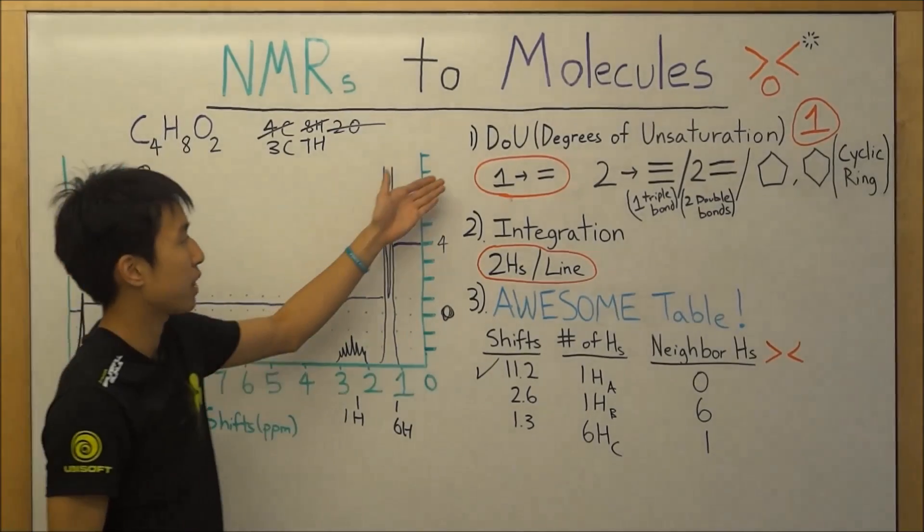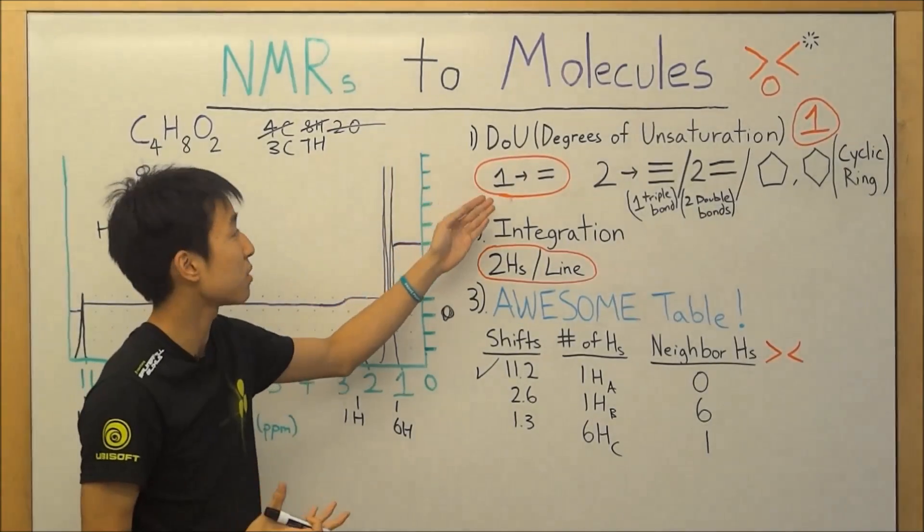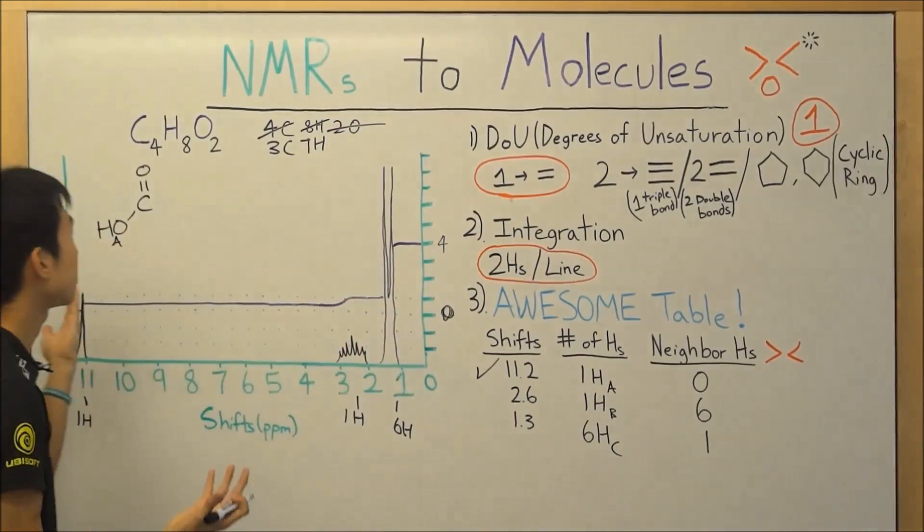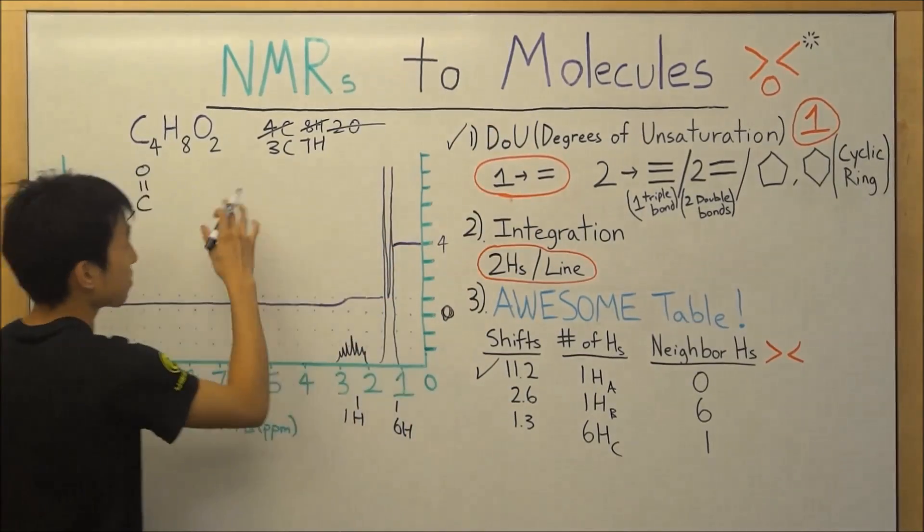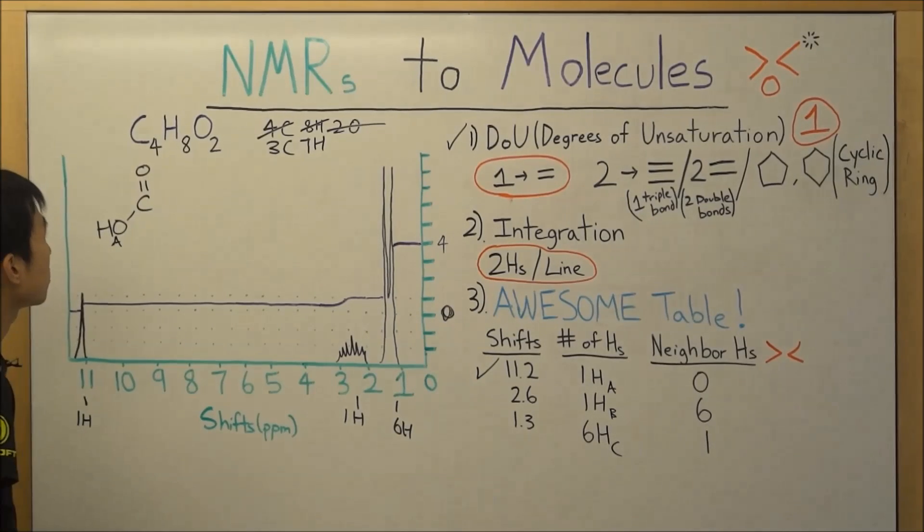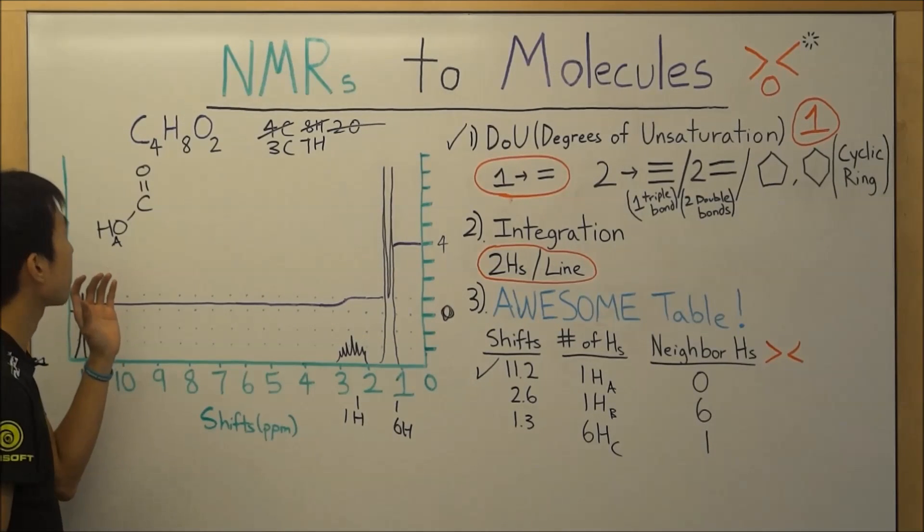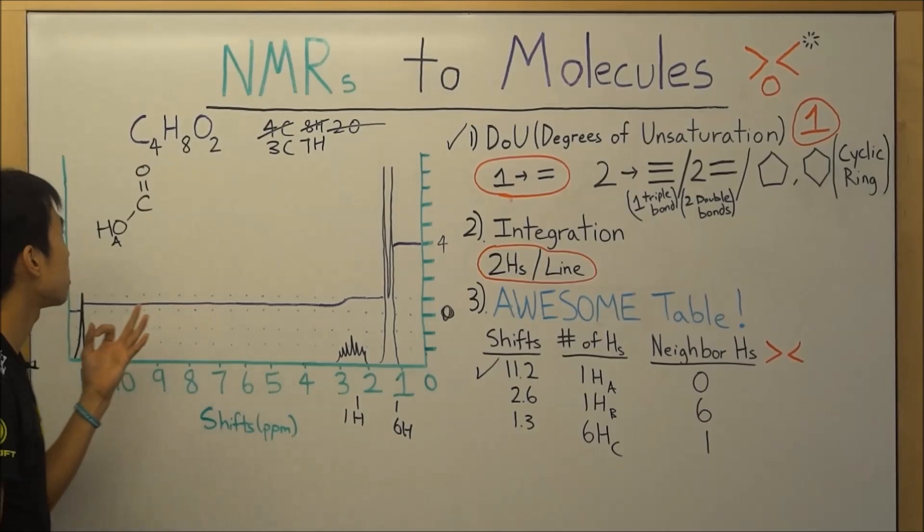And then if we check with our degrees of unsaturation, we already took care of the double bond. So everything's all satisfied over here. And so it looks like we're still missing three carbons, seven hydrogens.